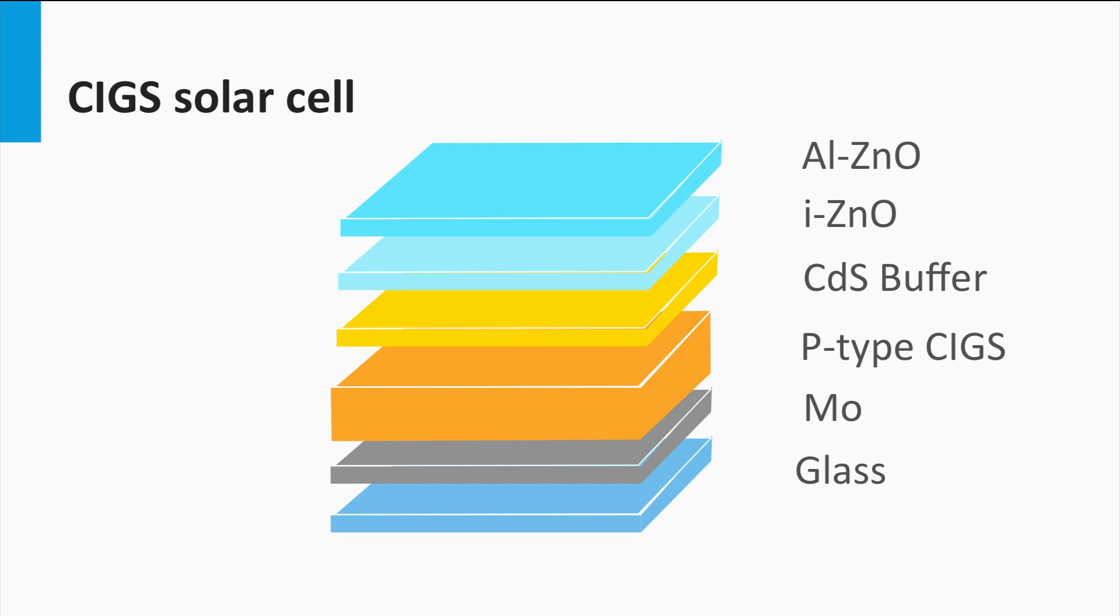Similar to some concepts of the thin film silicon technology, the aluminum doped zinc oxide acts like a transparent front contact for the solar cell. On top of this transparent conductive oxide, anti-reflective coatings can be placed, as discussed for the crystalline silicon technology.